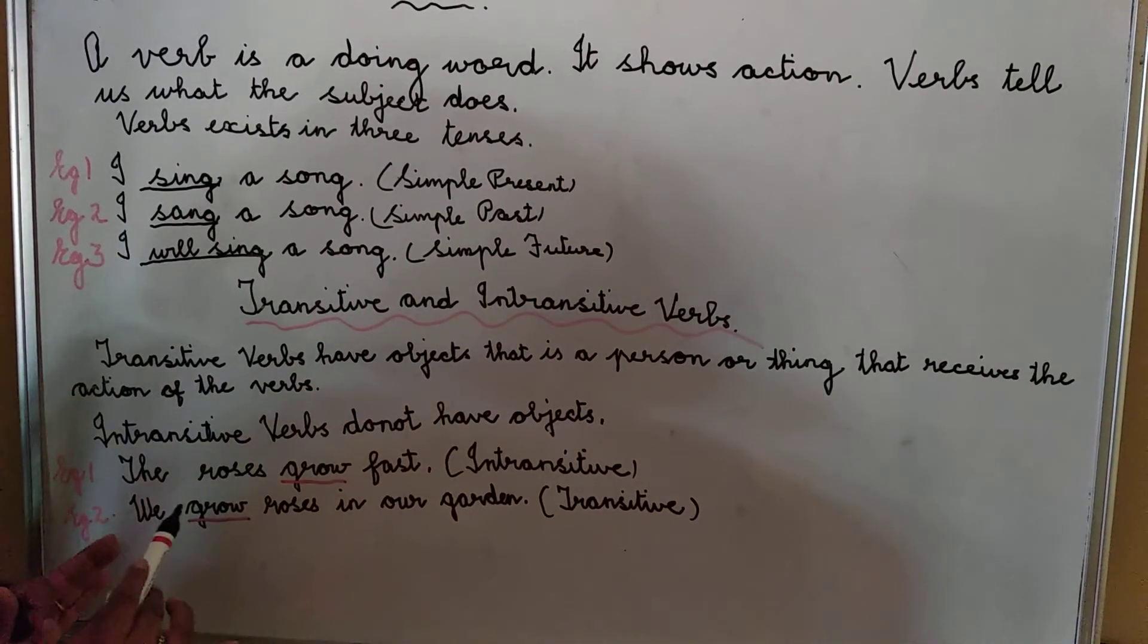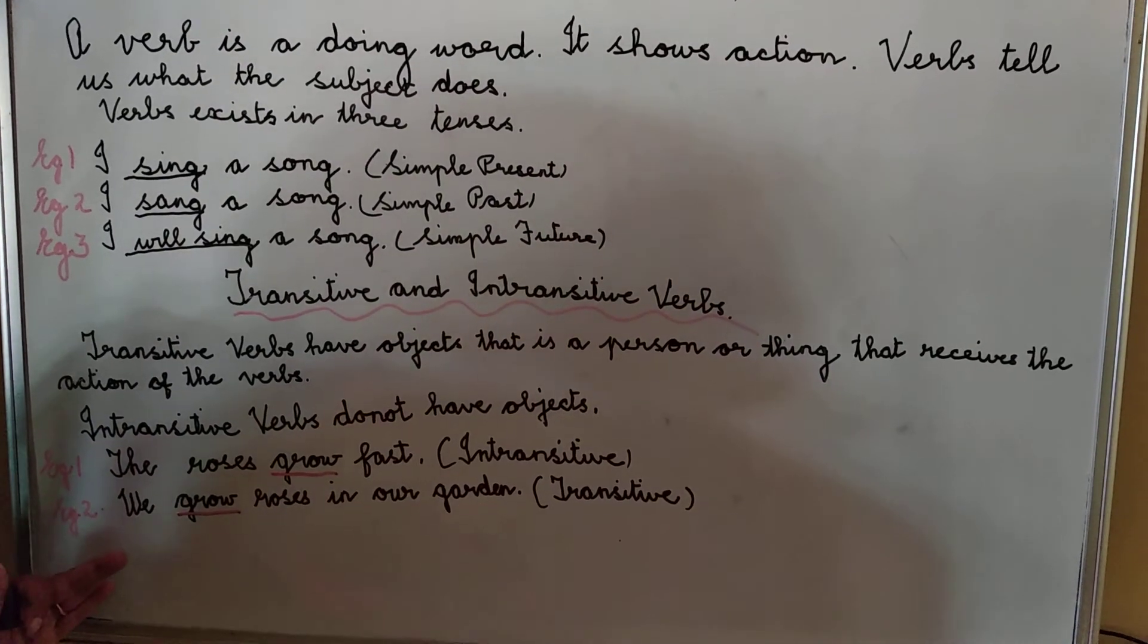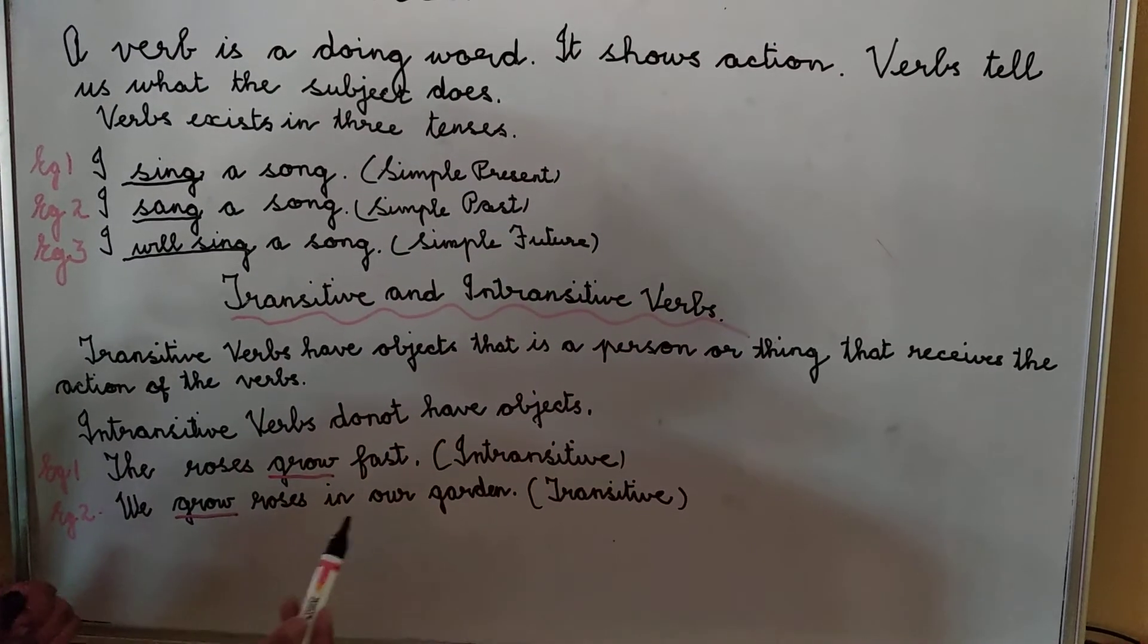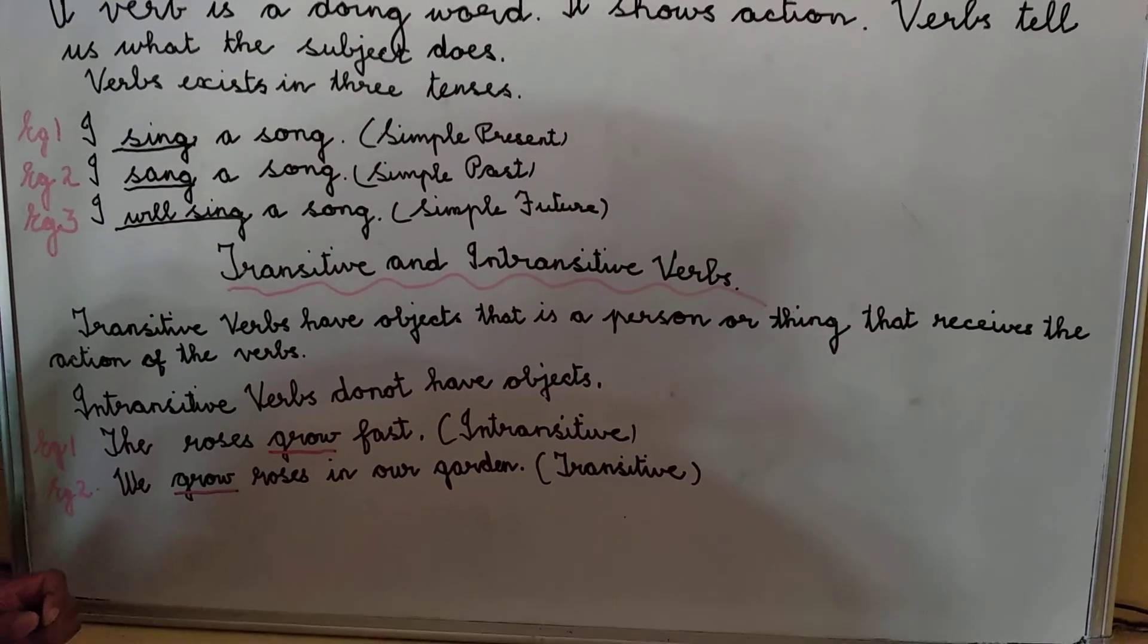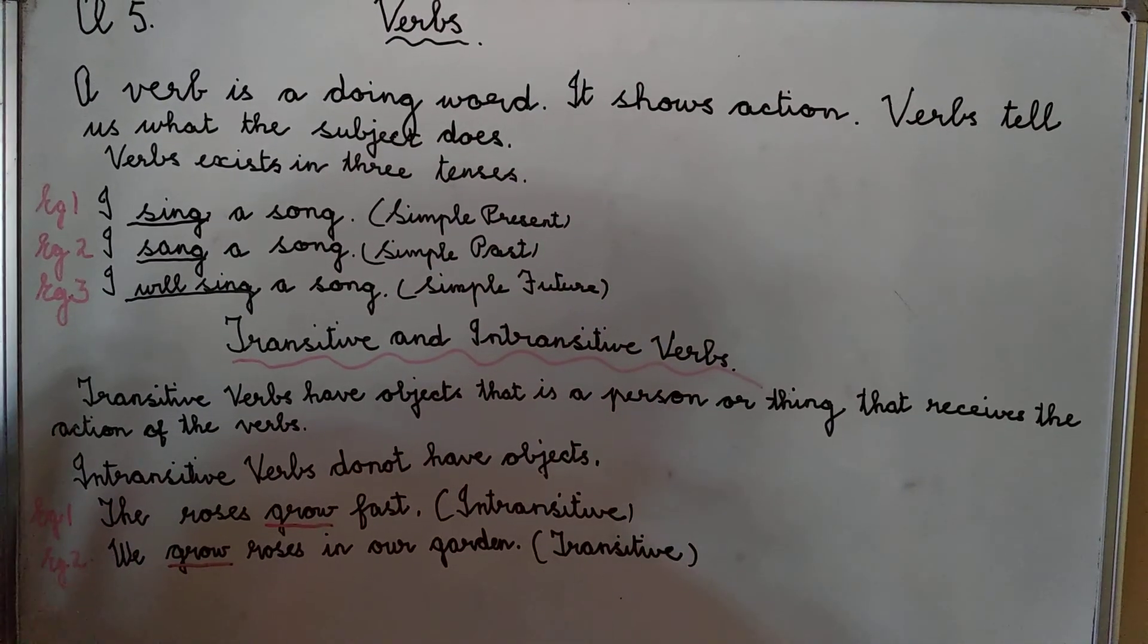We have an object. The roses grow in our garden so that the verb has objects in this sentence. So this is a transitive verb and that is an intransitive verb.